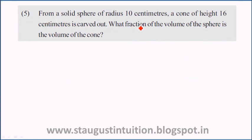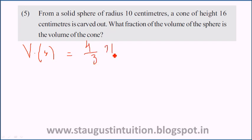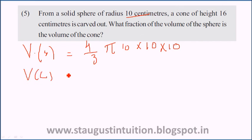What fraction of the volume of the sphere is the volume of the cone? Volume of the sphere is equal to (4/3)π r³, that is (4/3)π × 10³. Volume of the cone, V_cone, is equal to (1/3)π r² h.